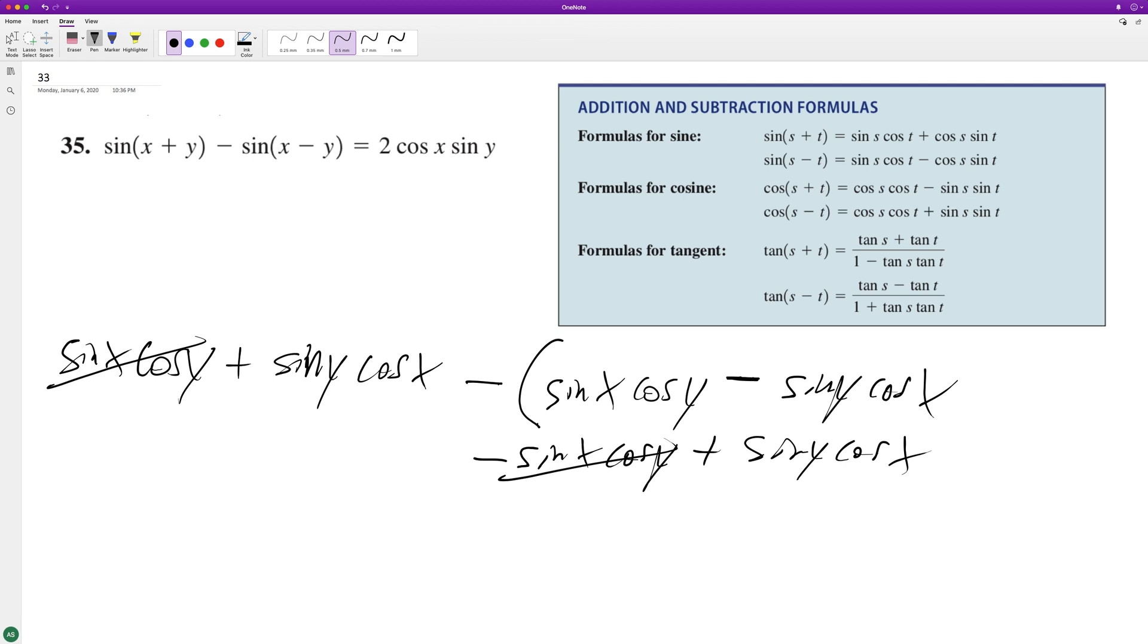So this cancels this out, and we're left with the two sine y cosine x, and to match it up with what we have here, we'll just rearrange the cosine of x and the sine of y.